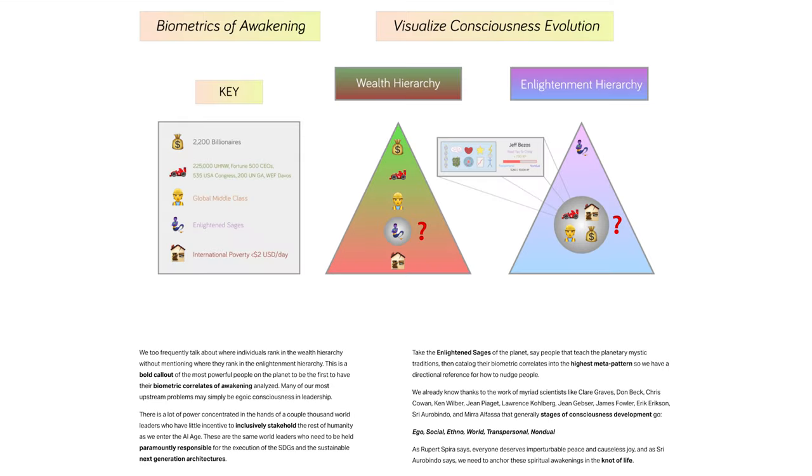We too frequently talk about where individuals rank in the wealth hierarchy without mentioning where they rank in the enlightenment hierarchy. This is a bold call-out of the most powerful people on the planet to be the first to have their biometric correlates of awakening analyzed.